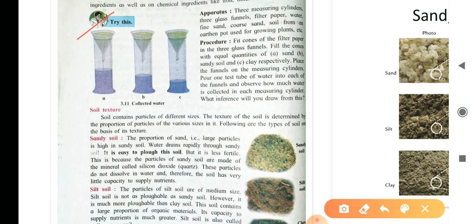Fit the cones of the filter paper on the three glass funnels. Fill the cones with equal amounts of A, sand, B, sandy soil, C, clay respectively. Place the funnels on the measuring cylinders. Pour one test tube of water into each of these funnels and observe how much water is collected in each of the measuring cylinders. What inference will you draw from this? If you can do this experiment at home, please try this if possible.